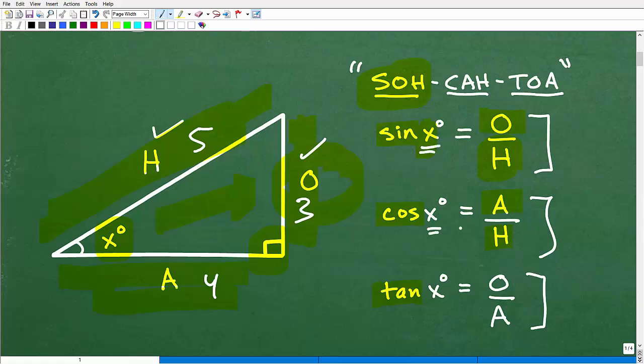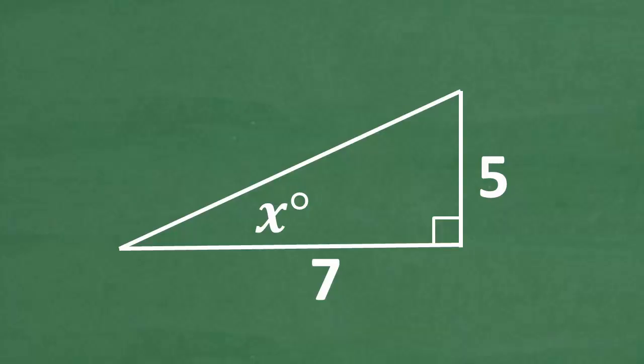These are kind of our options here. We have the sine, the cosine, and tangent. But if we have enough information to use one of these trigonometric functions, we could solve for the angle. So let's go back to our problem here. What sides do we have? I have this angle, but I have this side and this side. So what are those sides?